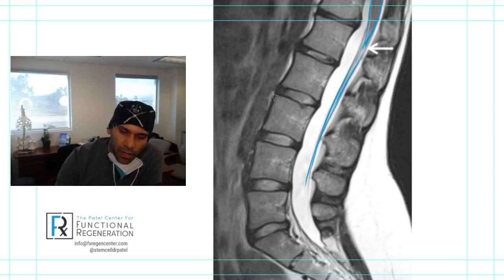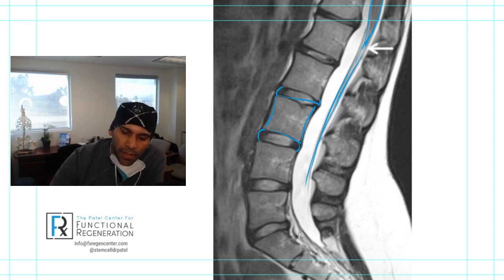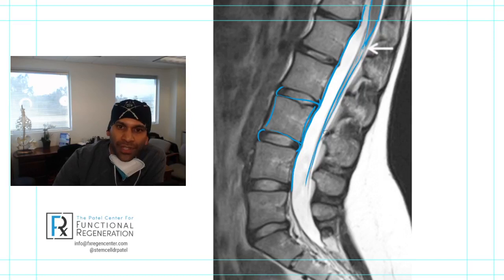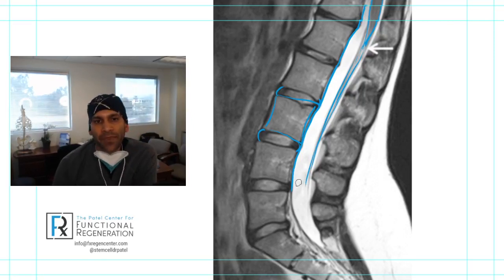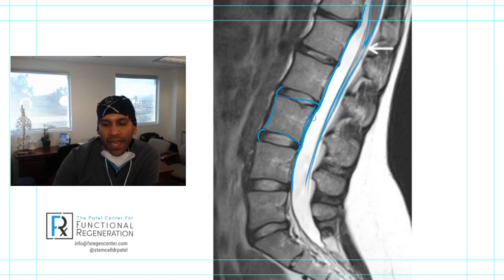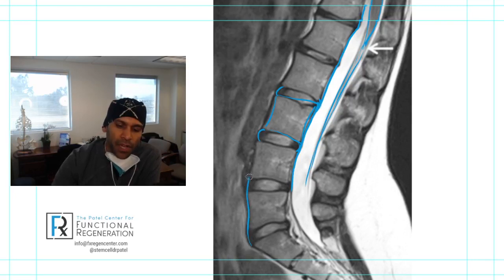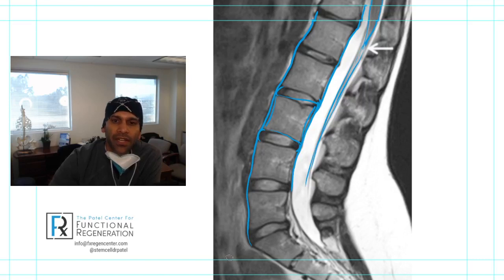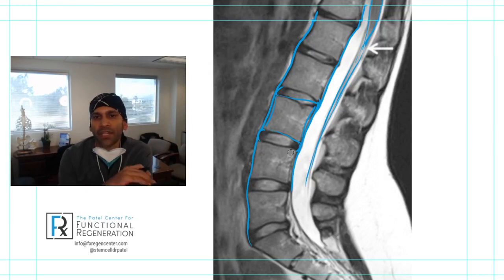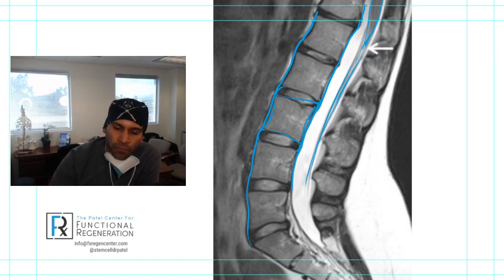There are some other structures I want to point out. There's this black line going across here — that is called the posterior longitudinal ligament, a strong ligament that connects the back of the vertebral bodies and borders the back of the discs. Similarly, we have a black line in the front of the body called the anterior longitudinal ligament, which connects the front of the vertebral bodies and borders the front of the discs.